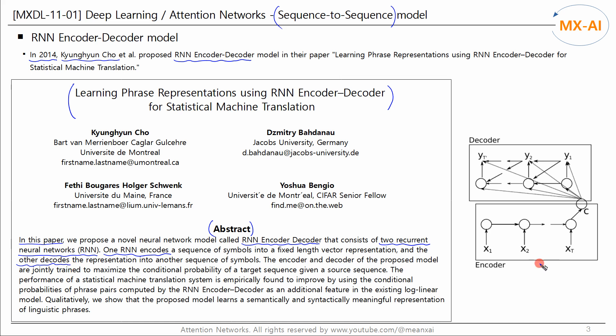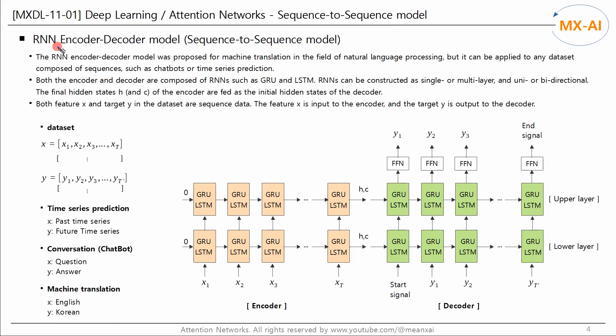The RNN encoder-decoder model proposed in this paper works as follows: both the encoder and decoder consist of recurrent neural networks. The output C of the encoder is fed to the decoder as the initial hidden state. This model can be applied to any dataset that consists of sequences, such as machine translation, chatbots, and time series forecasting. Both the encoder and decoder are composed of RNNs such as GRU and LSTM. RNNs can be constructed as single or multilayer, and uni- or bidirectional.